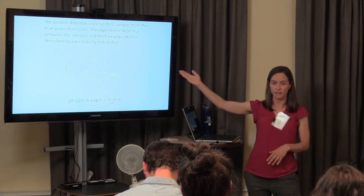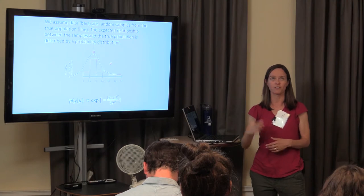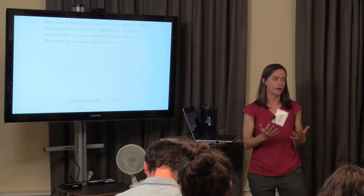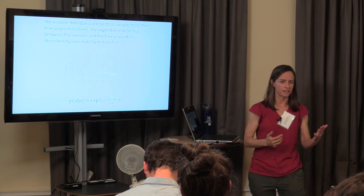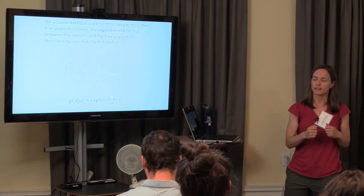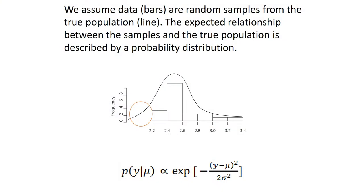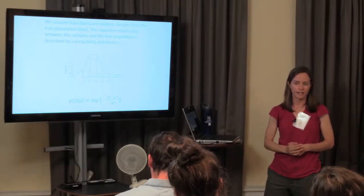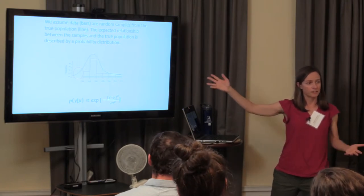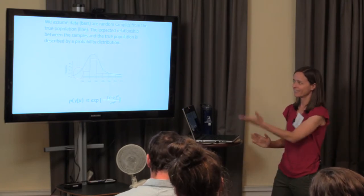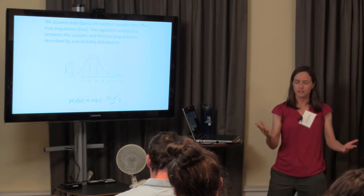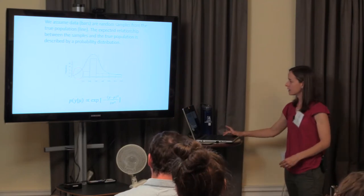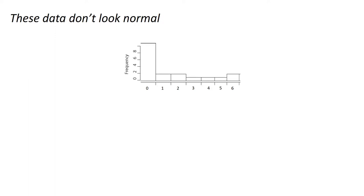The distribution allows us to make assumptions about how this group represents the entire population. We generally pick distributions that have known parameters — mu, standard deviation — that describe the distribution and allow us more flexibility to make comparisons. It also helps us estimate what we didn't measure. If we believe the population follows a normal distribution, we can estimate what it should be for unsampled regions. But not all data are normal.